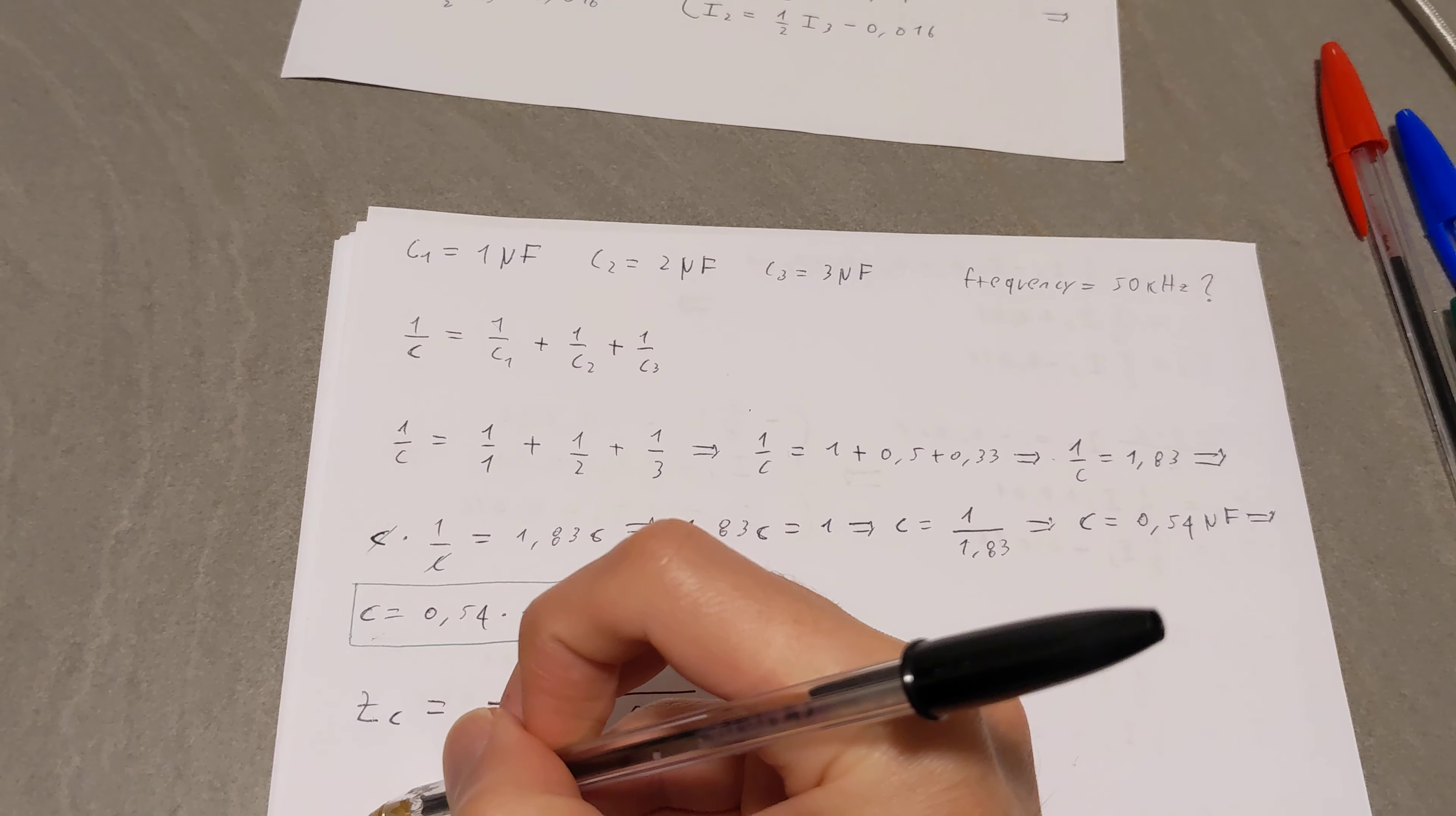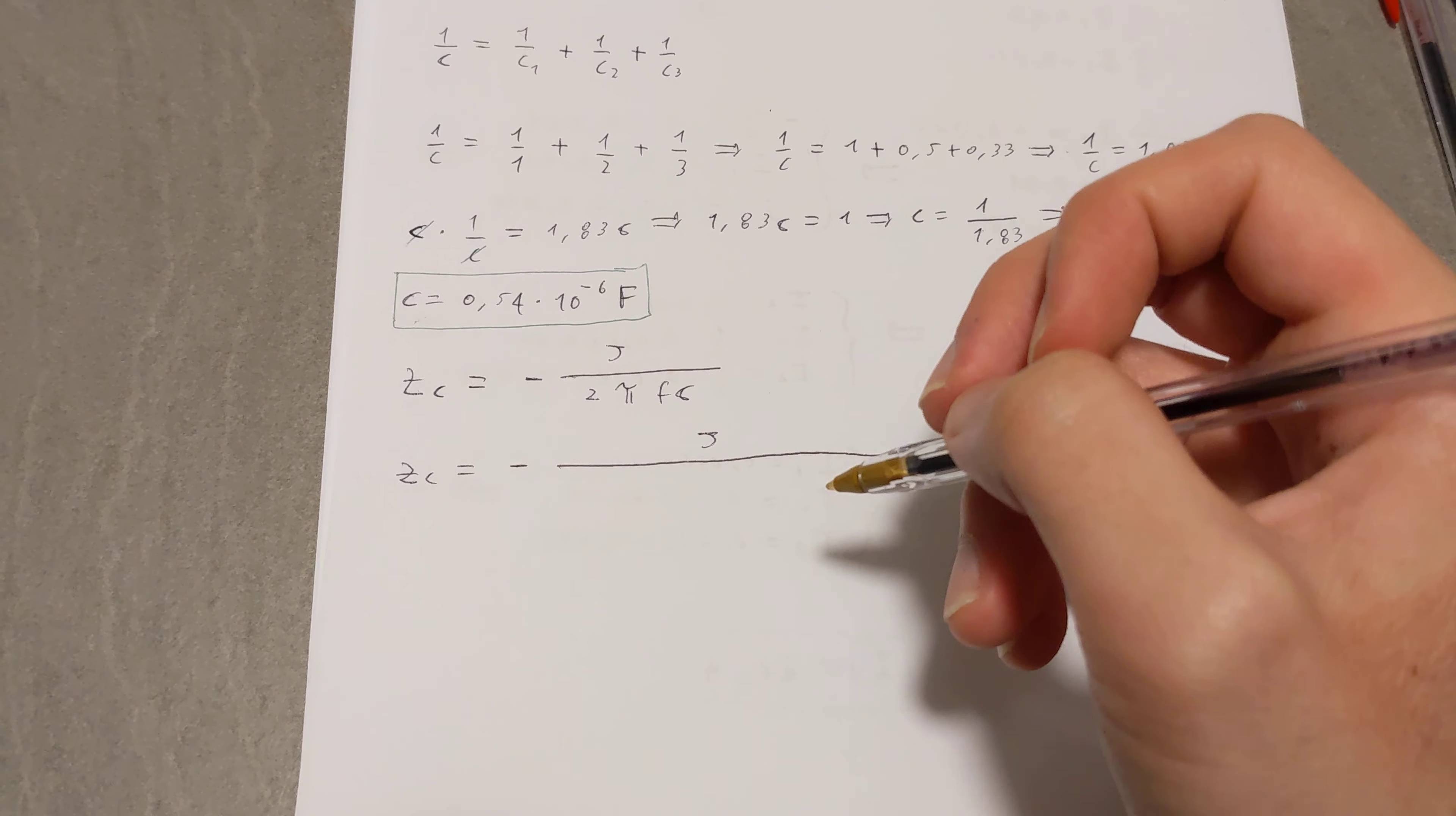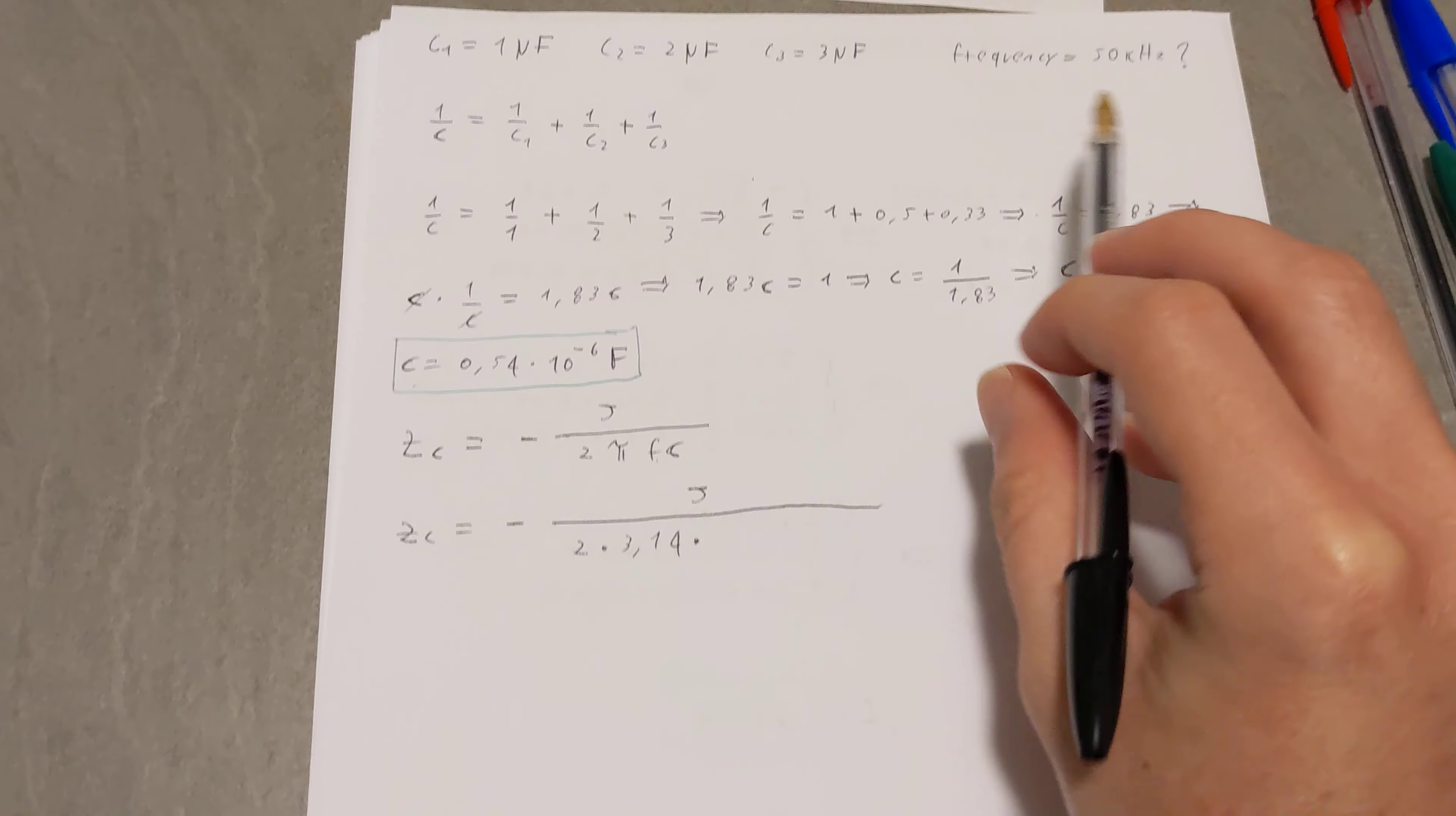Now, this basically tells us that ZC is equal to, and it's going to take a while, J times over 2 pi, which for the sake of argument, we're going to just write as 3.14. Don't get me started on that.